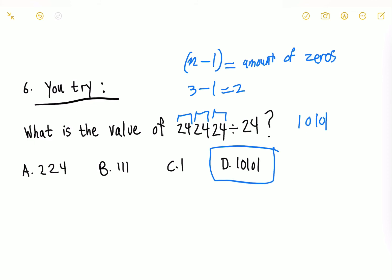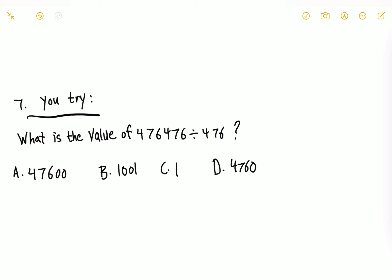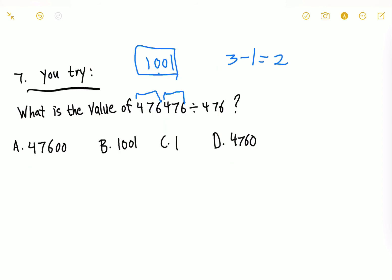Okay, this is pretty simple, right? Okay, now let's try another one. I want you again to pause the video and try to solve this by yourself. Okay, I hope you attempted to solve this. Now, let's do this together. So, it says, what is the value of 476476 divided by 476? So, 476 is repeated twice. And it's divided by 476. What does that mean? That means we're going to have two 1s. And because it's three consecutive repeated numbers, we're going to do 3 minus 1, which gives us 2. And then we put the 0s in between. So, as we said, the answer is going to be B.